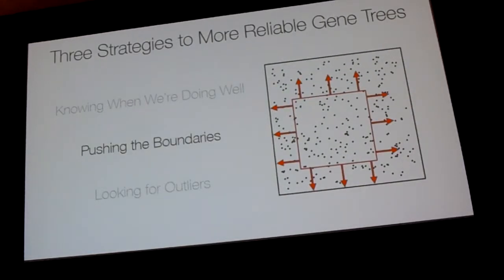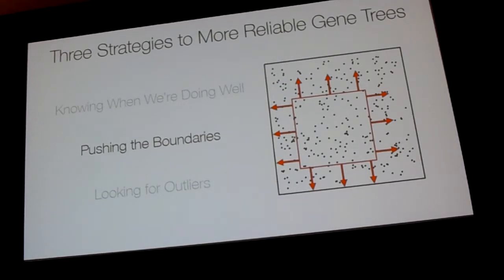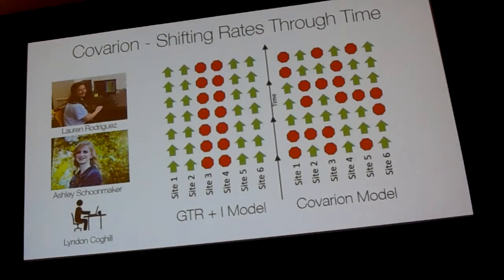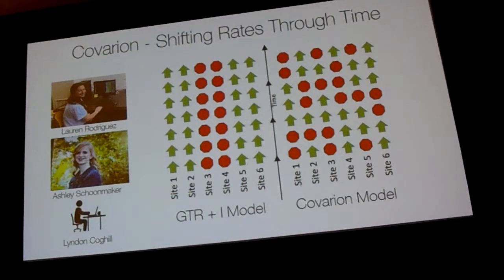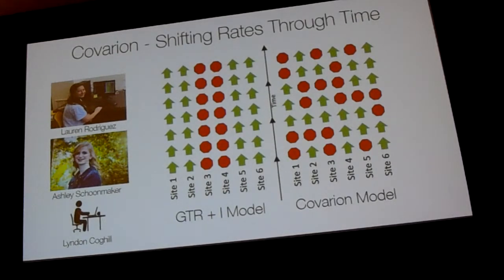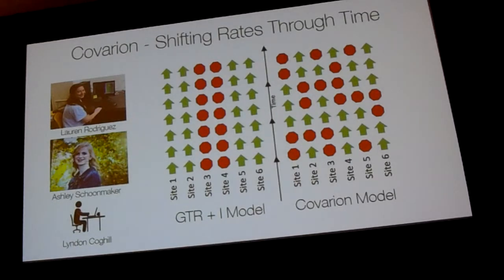The next approach is pushing the boundaries of the red box further so we can encompass more genes. In this case, we're not actually developing new models, but simply asking whether available models that aren't applied very often can actually help us — do they provide a better fit to the kinds of data we collect in phylogenomic studies? One model we've become really interested in is known as the covarion. The covarion differs importantly from our standard GTR class models. While GTR class models with gamma-distributed rates or invariant sites can model rate variation among sites, these models still assume the rates assigned to a site stay constant across the tree.